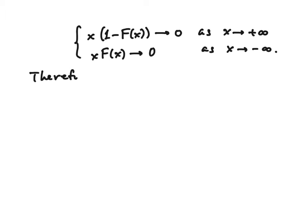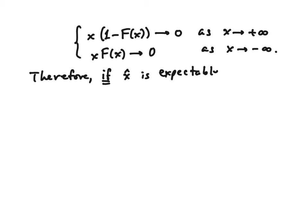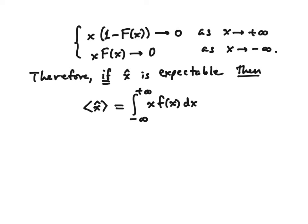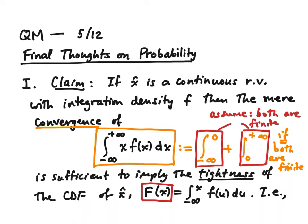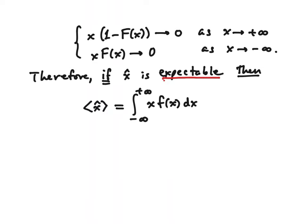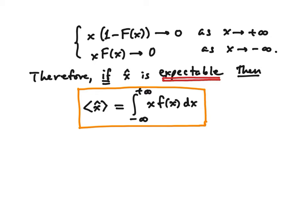Just the fact that this integral of x times f(x) over the entire real line converges. Now, the definition of a doubly improper integral: it's the integral from negative infinity to zero plus the integral from zero to positive infinity, provided both are finite. If I assume that it does converge in that sense, that turns out to be sufficient to imply that capital F(x) is a tight function.